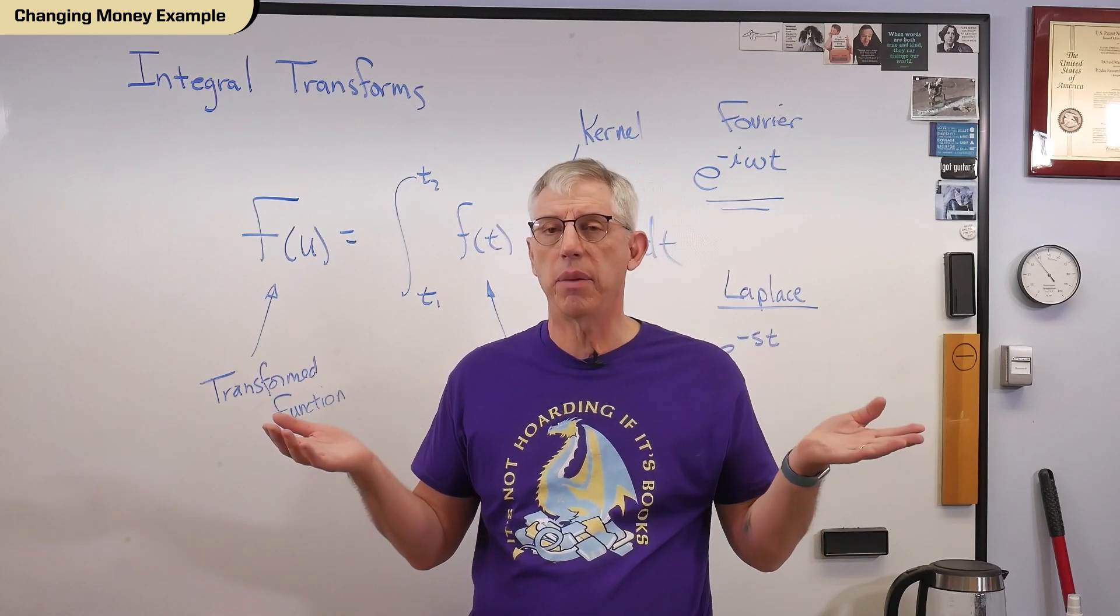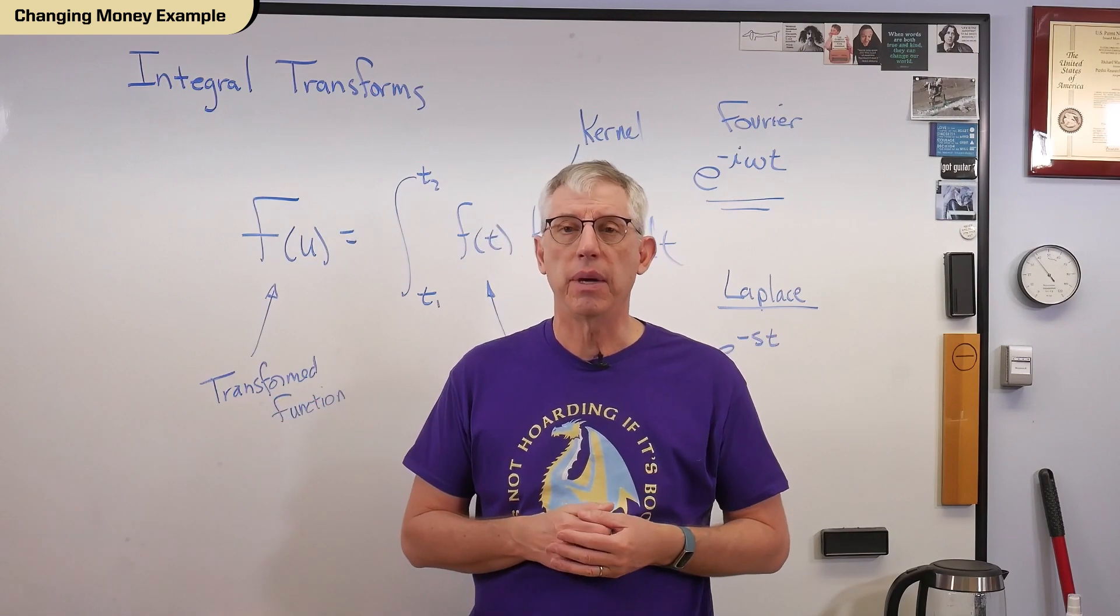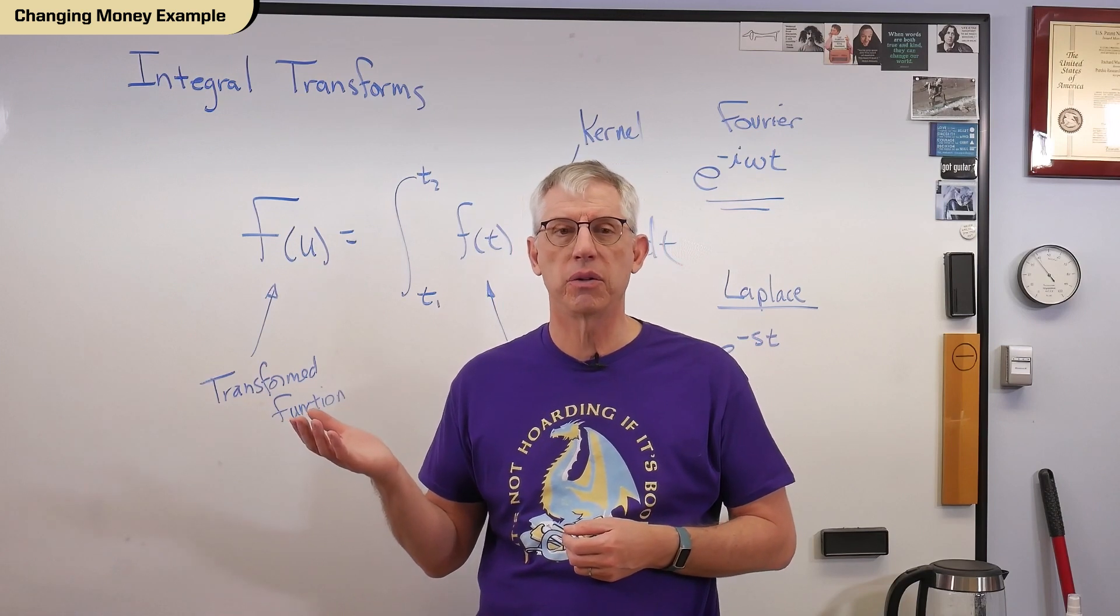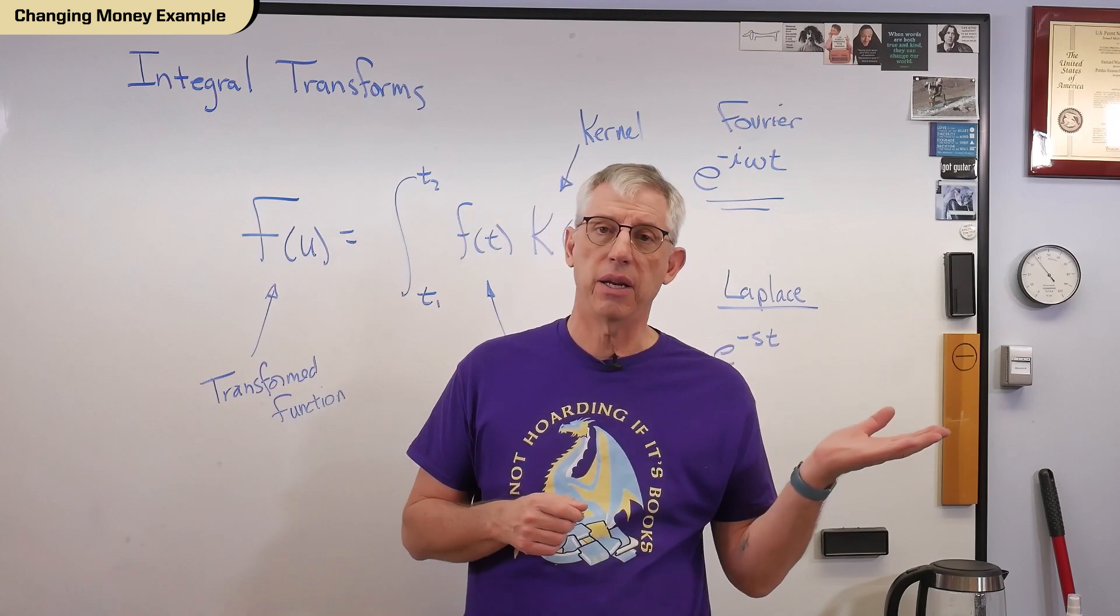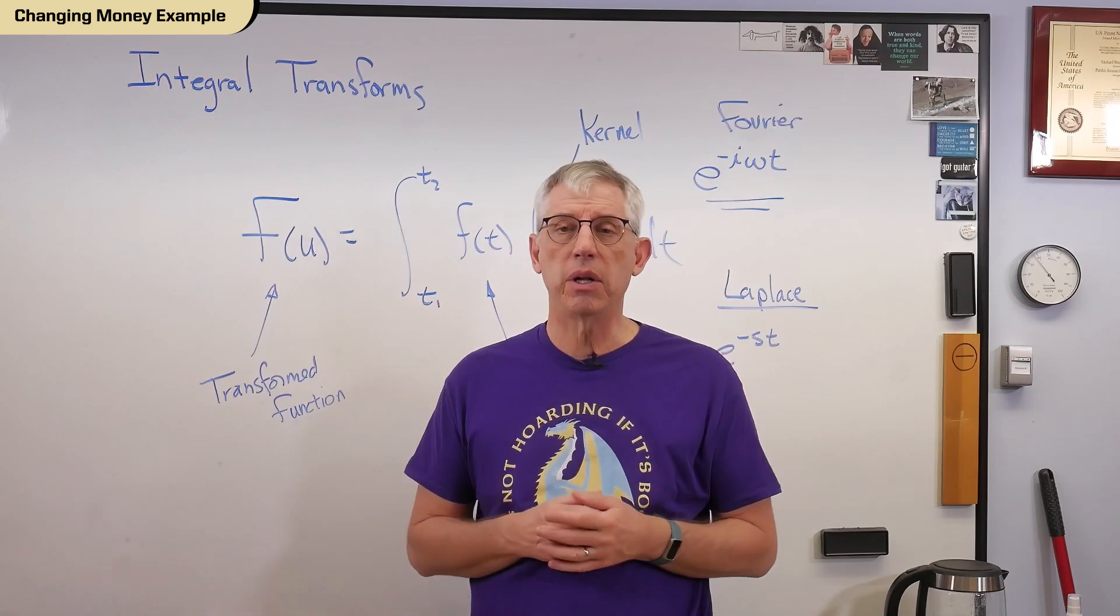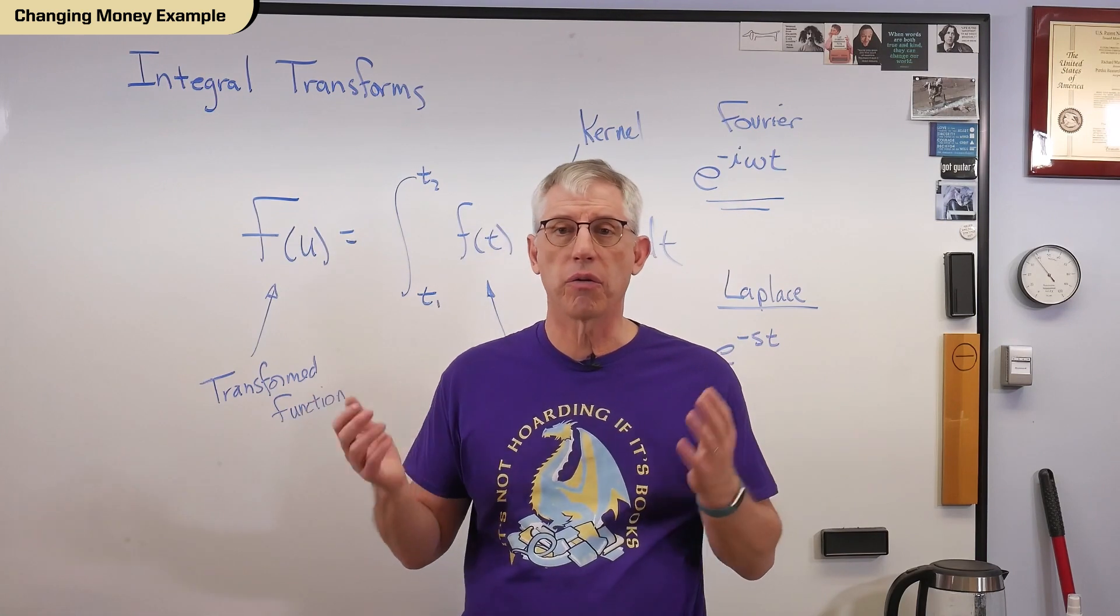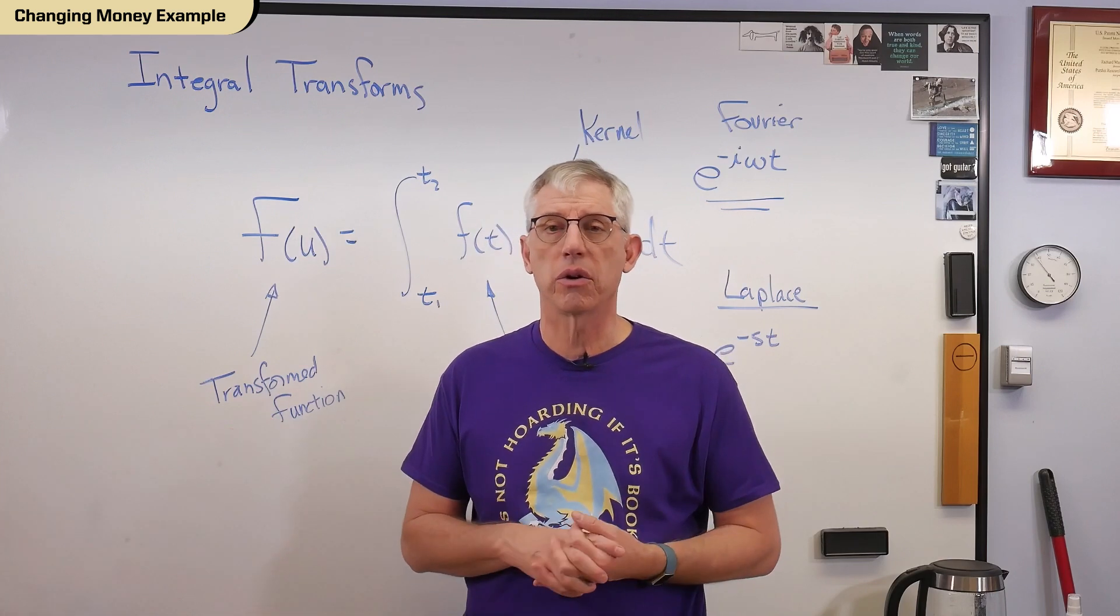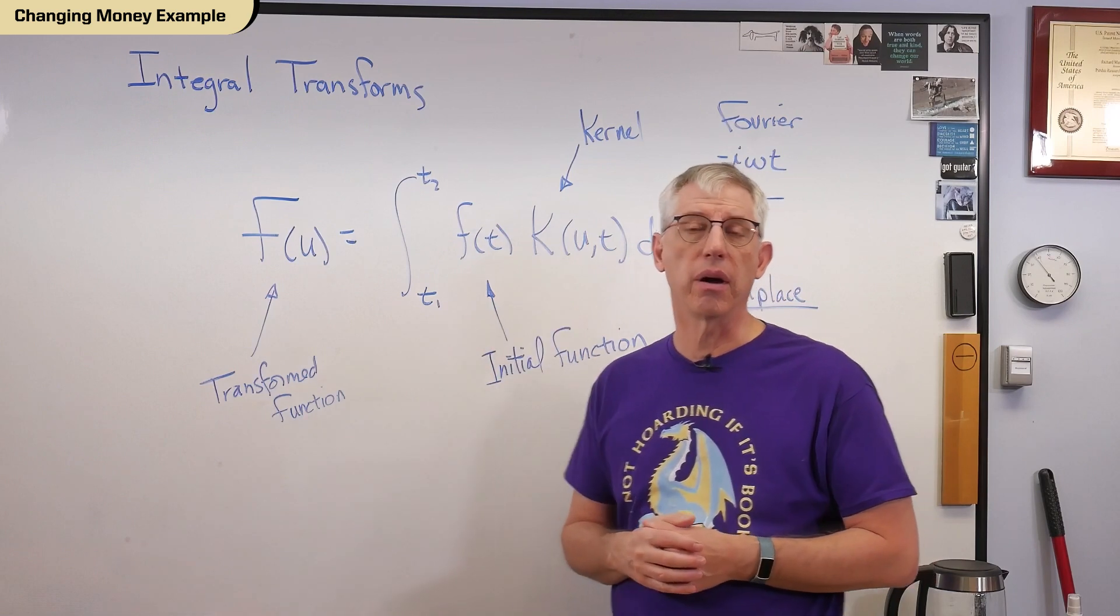They have the same buying power. I can buy the same stuff with both of them, but they look different. If I'm in Germany, I'm going to need euros. Most German stores don't want dollars. They want euros. Well, if I'm in the U.S., I need dollars. So when I need to go back and forth, say, between those two places, I'm going to need to transform my money back and forth from one to the other. It's just that I need it in one form or another in order to work with it. And that's not a bad analogy for what's going on here.